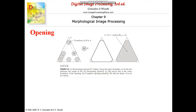Let us move on to the next morphological operation: opening. We have two sets — set A, which is a triangle, and set B, which is a circle. Set B is the structuring element having its origin at the center of the circle. Opening is a morphological operation used to eliminate thin protrusions of a set. This triangle, set A, has small thin protrusions, and if we perform an opening operation on A using the circle, these protrusions are eliminated.